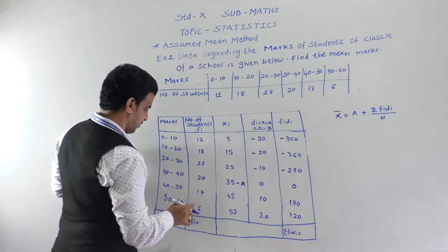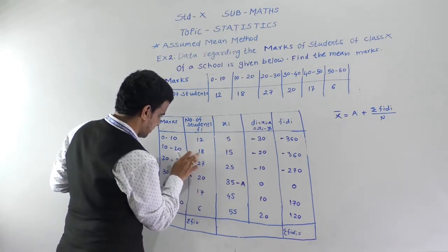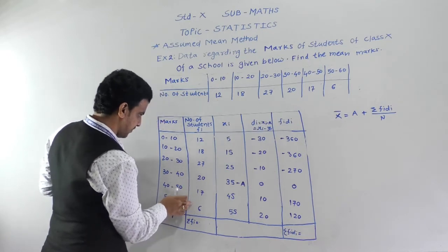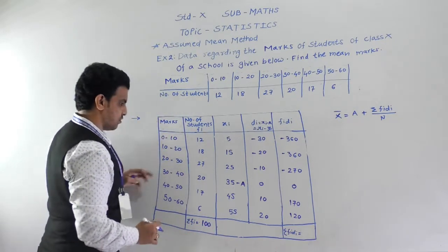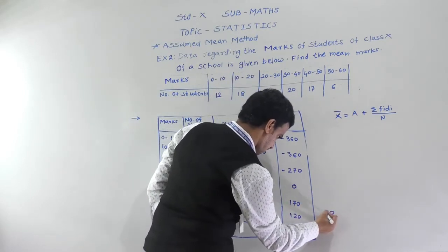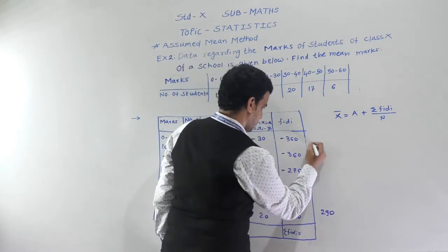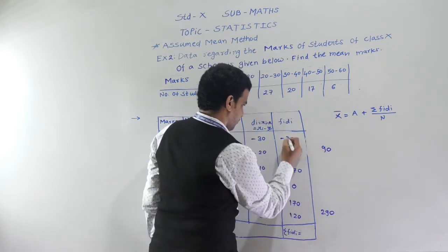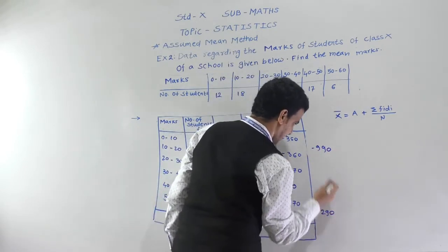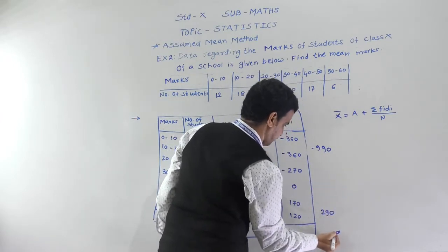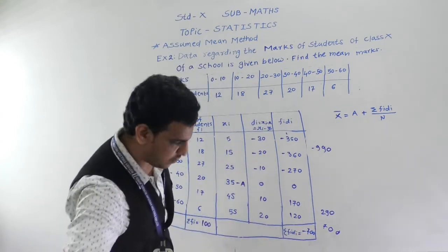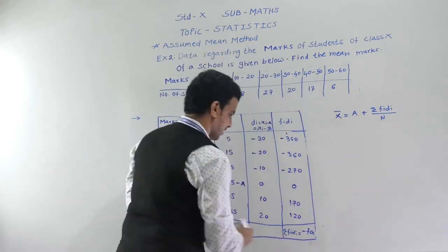Summation fi: 12 + 18 + 20 + 23 + 27 = 100, so n = 100. For summation fi × di, the positive values sum to 290 and the negative values sum to −990. Therefore Σfi × di = −990 + 290 = −700.